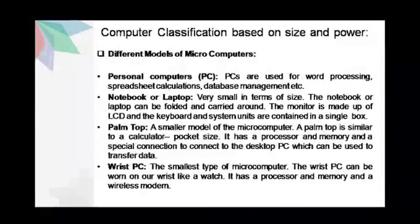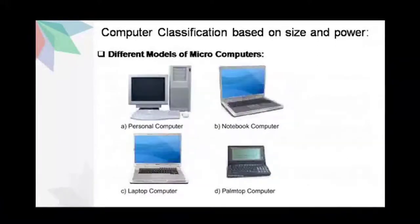The fourth and last one is a Reese PC, which is the smallest type of microcomputer. The Reese PC is something that can be worn on a wrist like a watch. It will have a processor, a memory and a wireless model. Here in this slide we can see the different figures of the different models of microcomputer — a personal computer, a notebook, a laptop, and a palm top computer.